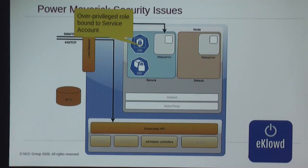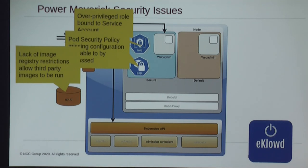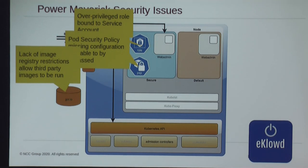In summary, the issues we went through: there's an overprivileged role bound to that secure namespace — that's what we leveraged in the first place. That web admin pod we popped granted us the ability to do things in the cluster we shouldn't. We see that a lot; environments still have full permissions from the service token level. PSPs are being deployed more, but we're seeing a lot of scenarios where PSPs can be bypassed in subtle ways. A big thing: your Kubernetes cluster shouldn't have access to Docker Hub or GCR by default. We should be running private image registries, because one of the ways I pivoted was by making a custom image and hosting it externally.